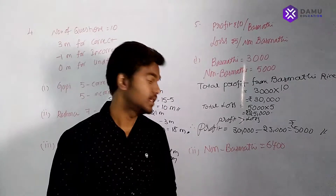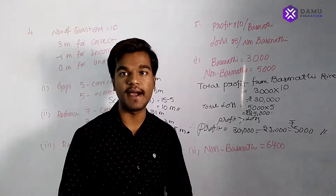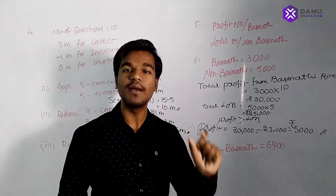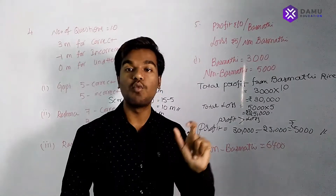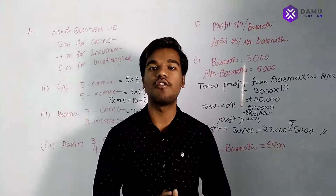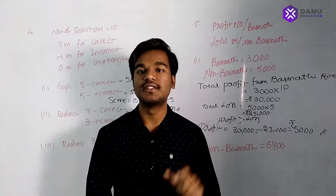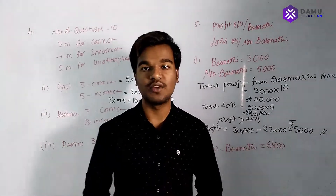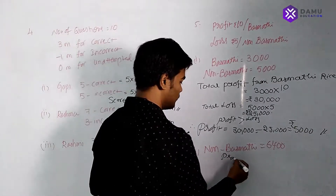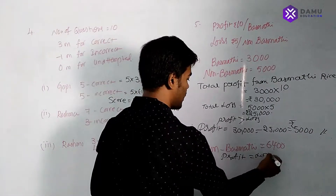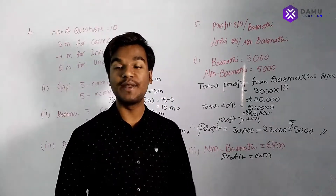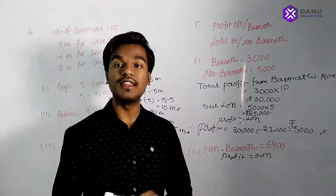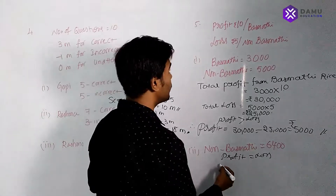Next question: the number of non-basmati rice bags sold is 6,400 bags and there is no profit, no loss. If there is no profit and no loss, we have to equate both profit and loss. If we take the subtraction of profit and loss we get zero, so both are equal. We need to find how many basmati rice bags to sell to equate with the non-basmati rice loss.